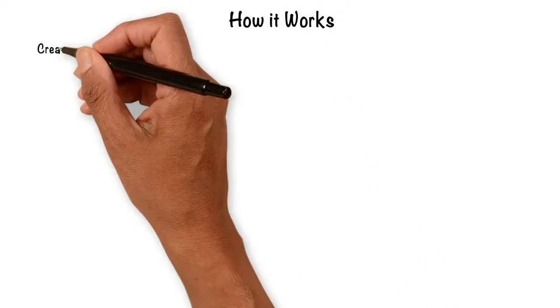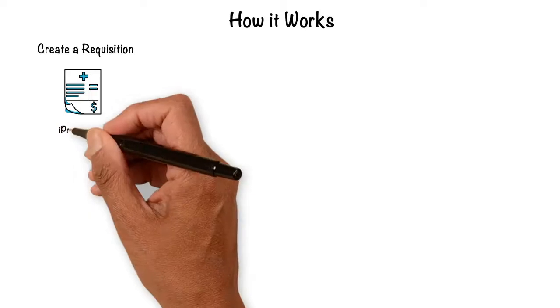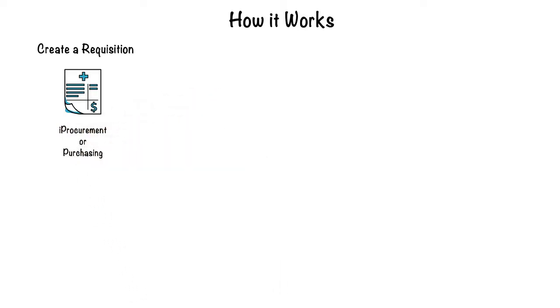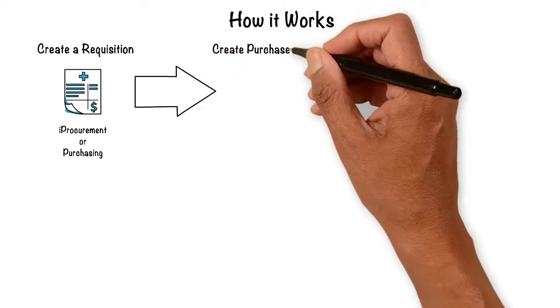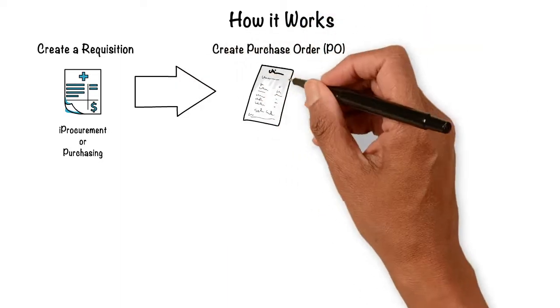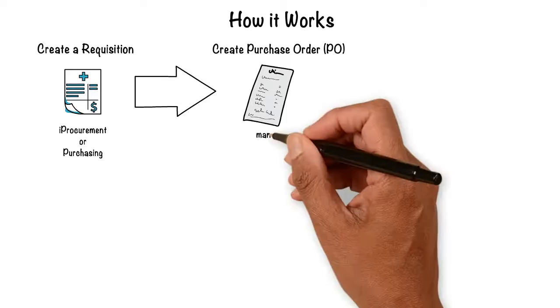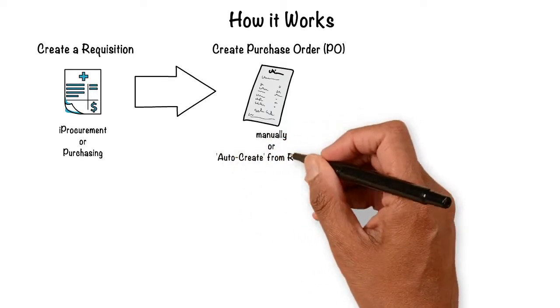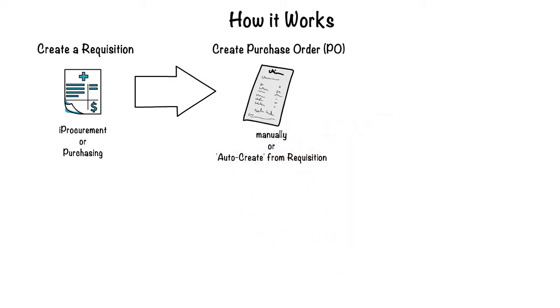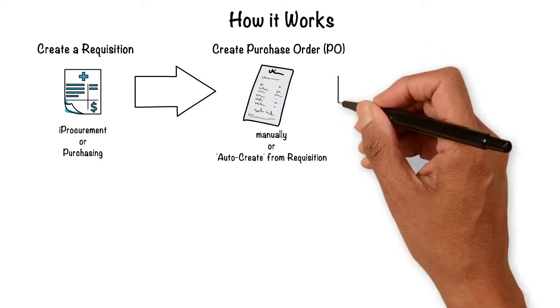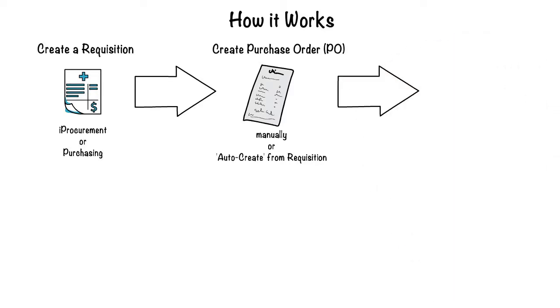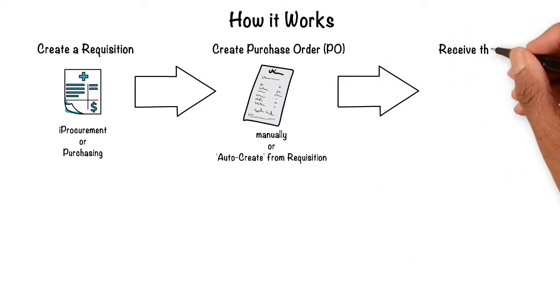We would create a requisition in the iProcure module or create it in the Purchasing module. And then we would create a Purchase Order — either manually or automatically through a requisition, which is called AutoCreate.